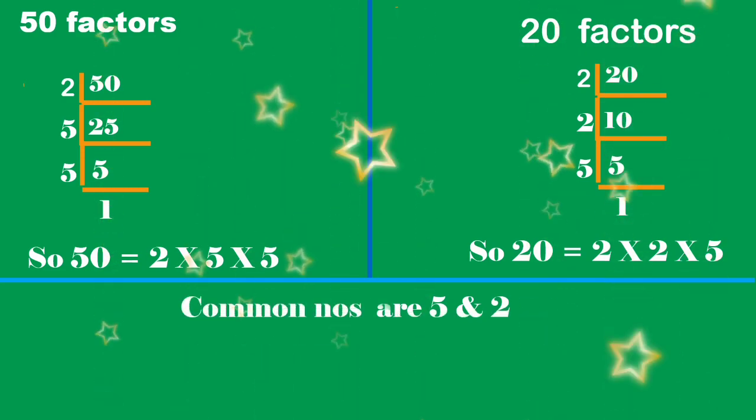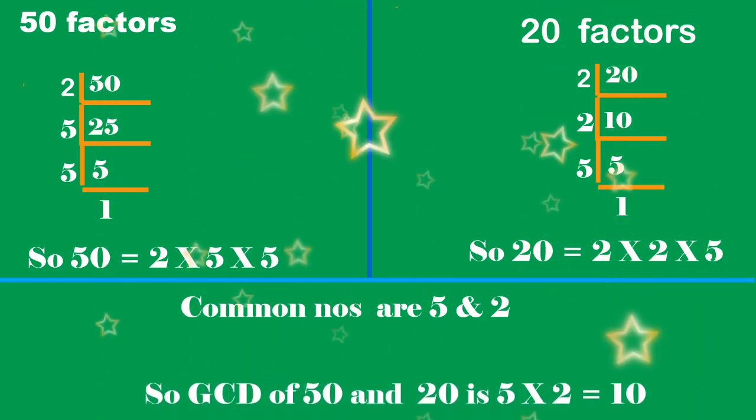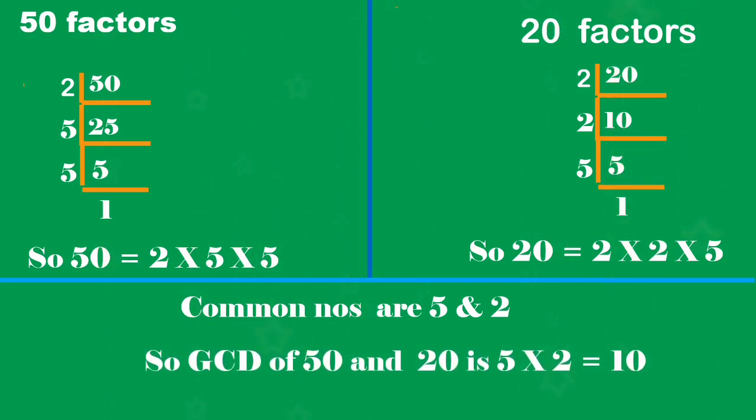Between 50 and 20, the common factors are 2 and 5. So the GCD of 50 and 20 is 2 × 5 = 10.